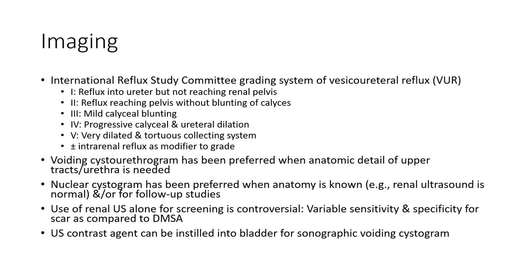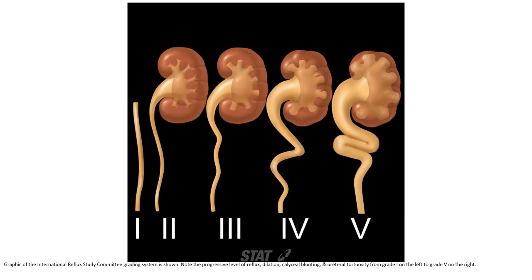An ultrasound contrast agent can be instilled into the bladder for sonographic voiding cystourethrogram. This graphic shows the International Reflux Study Committee grading system. Note the progressive level of reflux dilatation, calyceal blunting, and ureteral tortuosity from grade 1 on the left to grade 5 on the right.